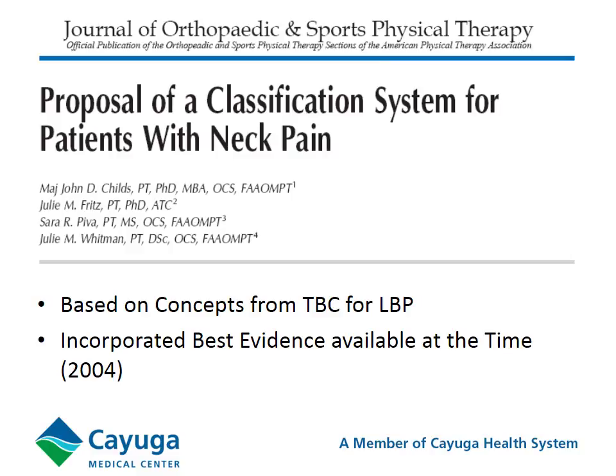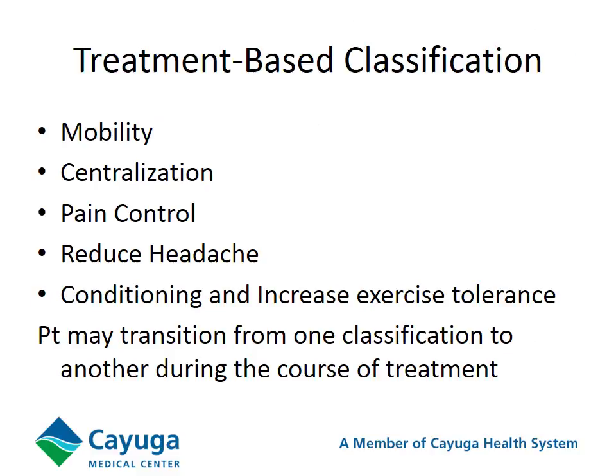In 2004, there was a proposal of the treatment-based classification. This was developed incorporating the best evidence available at the time. They came up with five categories: mobility, centralization, pain control, reduced headache, conditioning and increased exercise tolerance, and pain control. At this point I felt much happier — I felt I could keep track of five different categories.